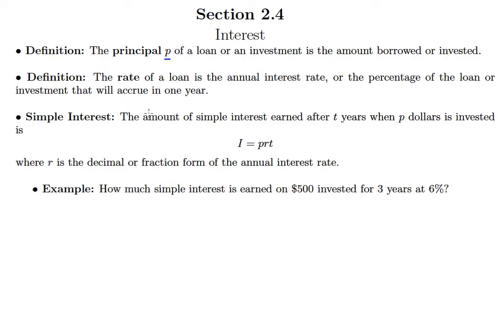The rate of a loan is the annual interest rate, or it's the percentage of the loan or investment that will accrue in one year. Basically after one year you'll earn some interest, and the rate of the loan is what percent of the principal that interest actually is. The amount of simple interest earned after T years when P dollars is invested is I equals PRT, where R is the decimal or fraction form of the annual interest rate — just like in our percent equation.